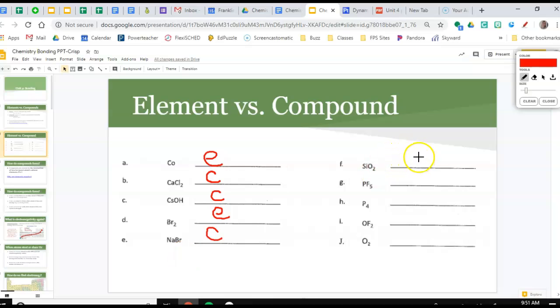Here we have silicon and oxygen, then phosphorus and fluorine. Similar to BR2, P4 is just four atoms of the same element, so it would be an element. Then this would be a compound, and this would be an element. I hope that clears up the distinction between the two as we move forward.